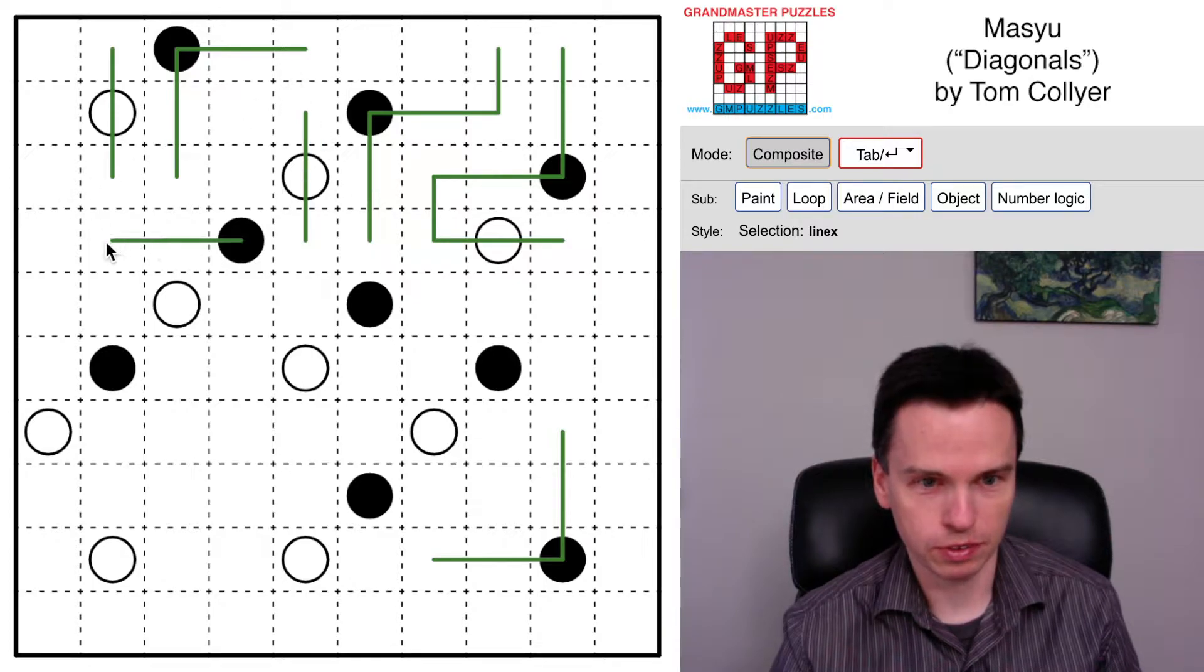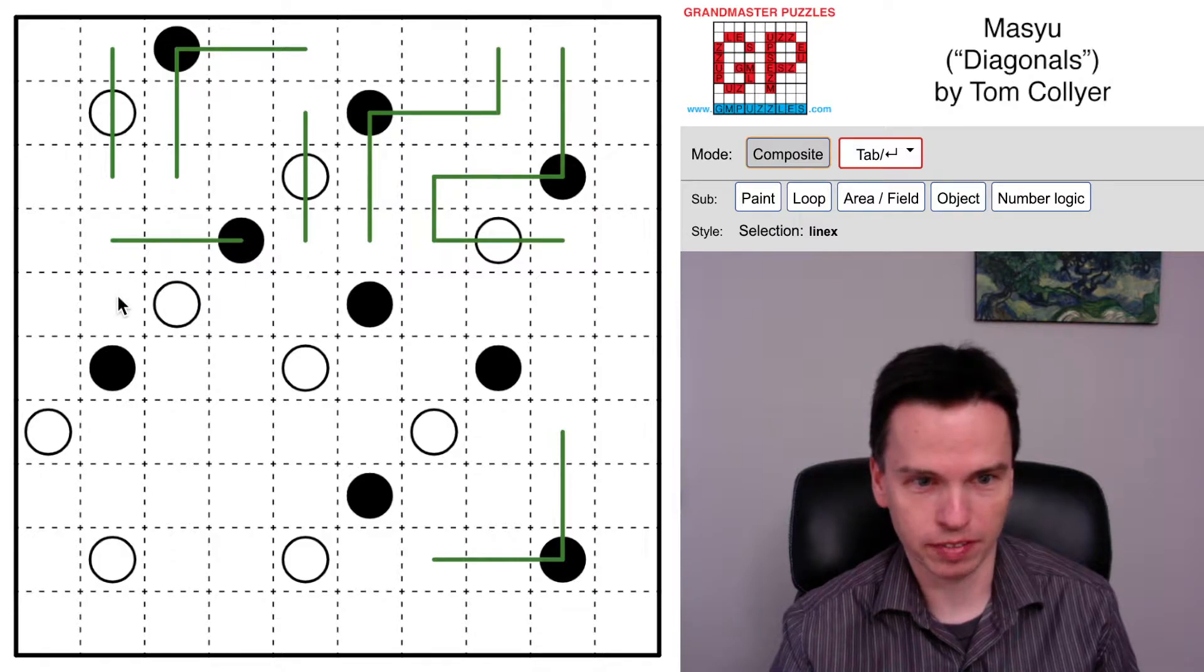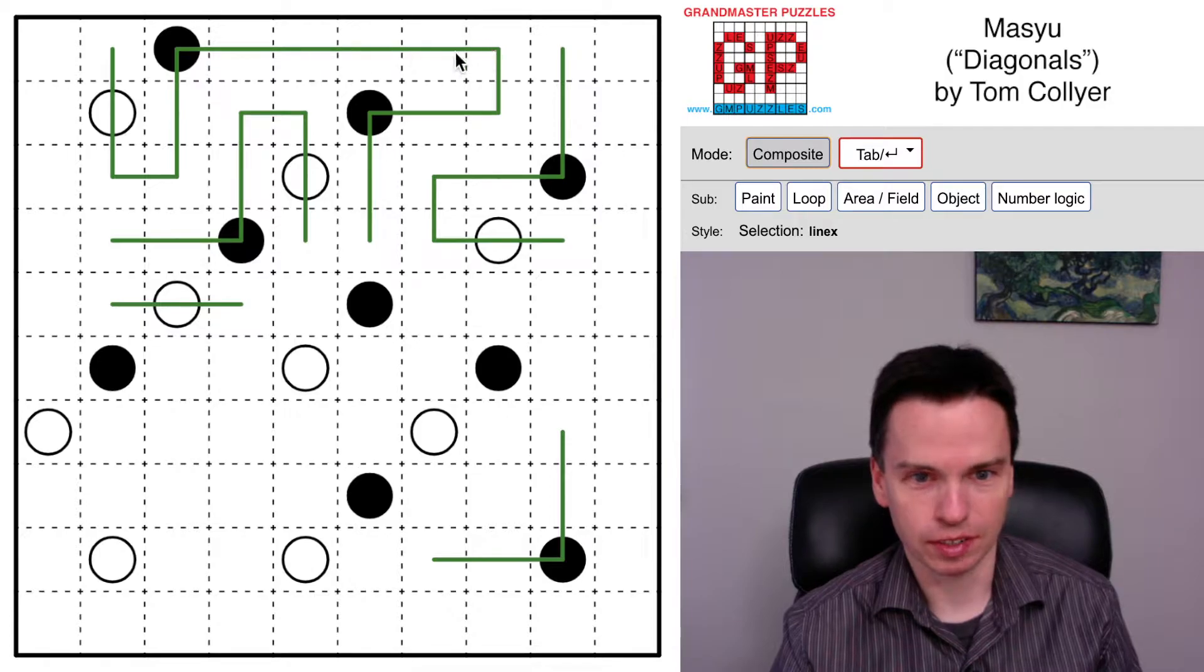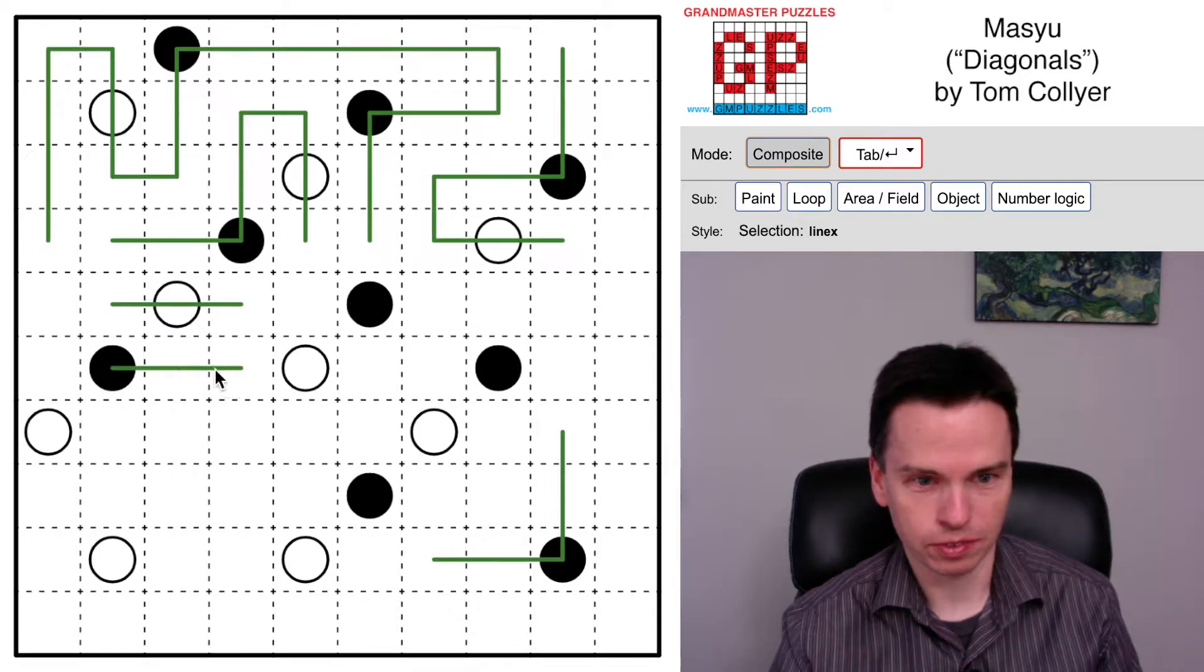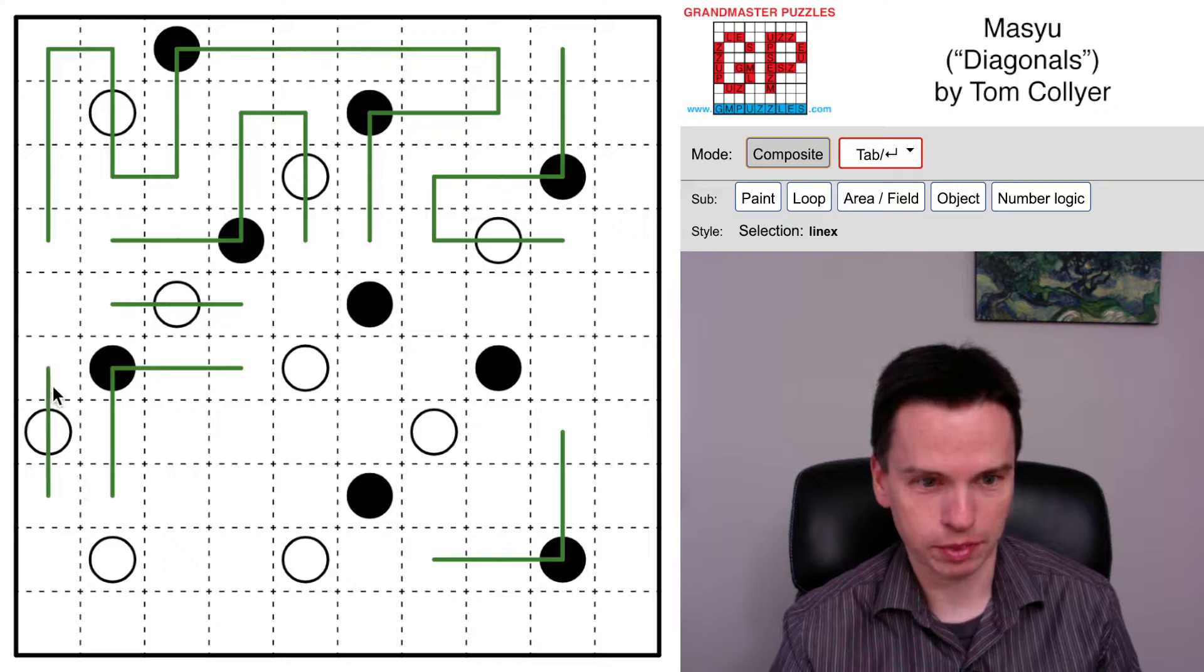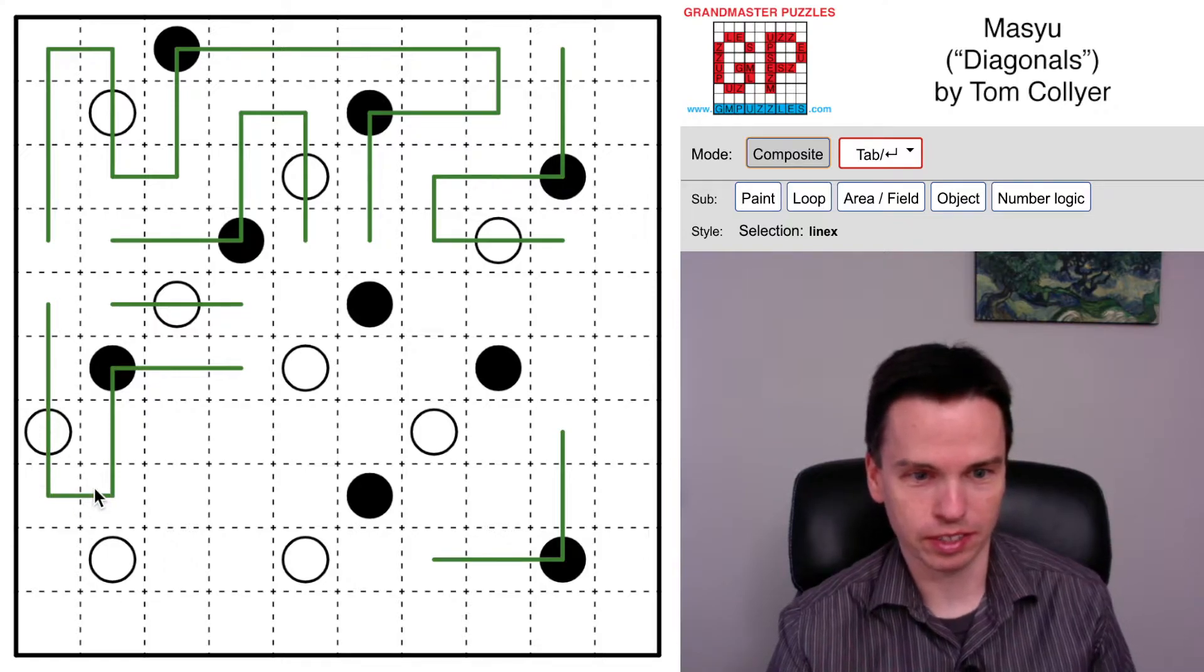It's going to set up new black cells that now have no option. For instance, this can't go to the right, so that's going left. That's another white that forces this section up. You get some of these starts coming through. This was on an edge and now can't come up, so we can put this in. This white cell now has to turn.